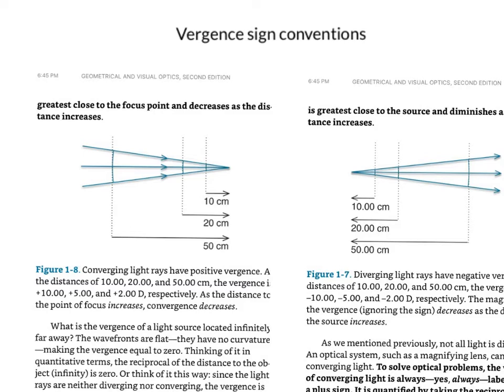So quickly, just to review, this line here that connects all the light rays is called a wavefront, and the curvature of this wavefront is called vergence. There's two types of vergences: positive vergence and negative vergence.